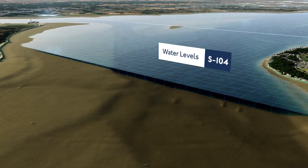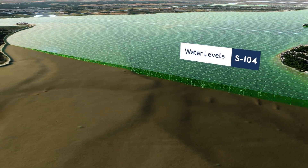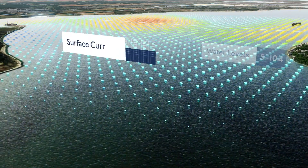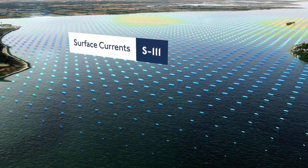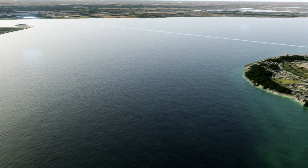S104 represents the water level heights and S111 the near surface currents. S104, the tidal water levels product specification, enables us to potentially add that tidal height on top of the bathymetric surface information.